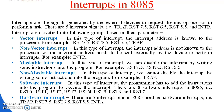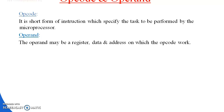Next, let's discuss opcode and operand. An opcode is a short form of instruction which specifies the task to be performed by the microprocessor. An operand is the data or address on which the opcode operates.